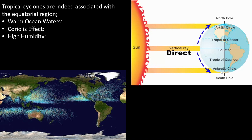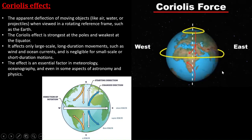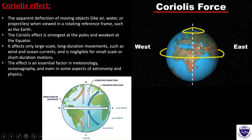The Coriolis effect is the deflection of a moving object — like air, water, or a projectile — when viewed from the outer surface of the Earth. If you are outside the Earth, like an astronaut, you would see a ball moving from the north pole to the equator deflect. But when you are on the planet itself, the ball appears to move in a straight direction. So the Coriolis effect is mostly associated with the outer reference frame.